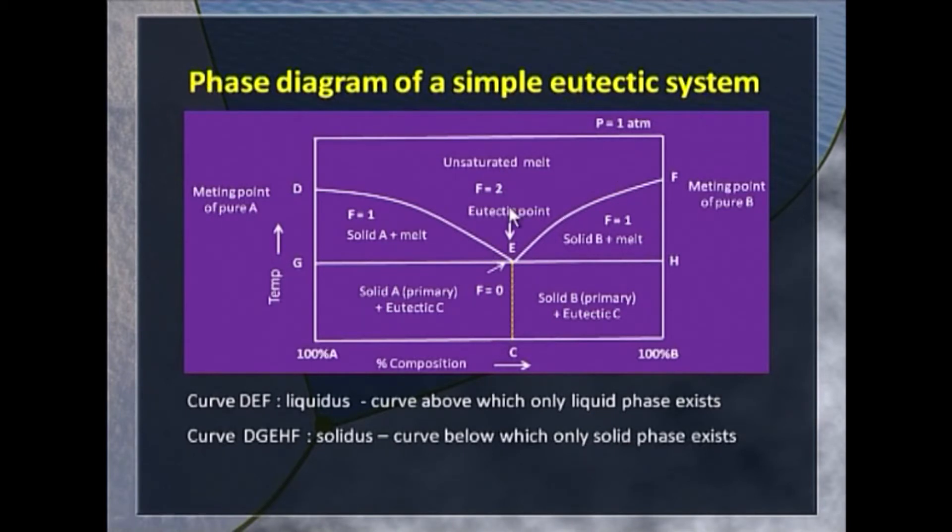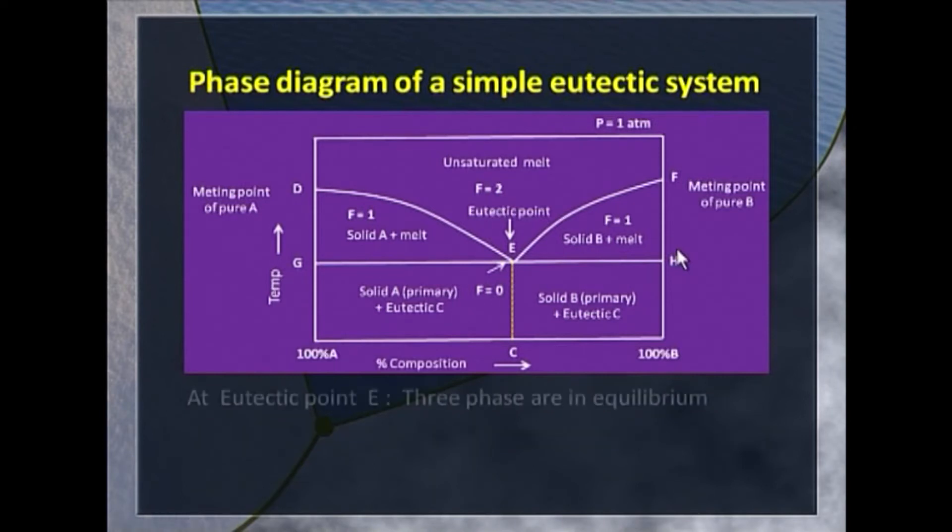We have melt in the higher top part of the diagram and solid at the bottom part. In between, we have two regions in which the solid is in equilibrium with the melt. On one side, we have solid A in equilibrium with the melt. On the other side, we have solid B in equilibrium with the melt. There is one characteristic point here when the two curves meet, which we call the eutectic point. Why do we call it eutectic point? We will see at a later stage. This is the place where we have solid A, solid B, and the melt in equilibrium, which is shown here.